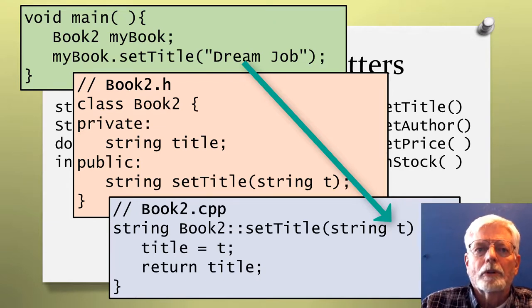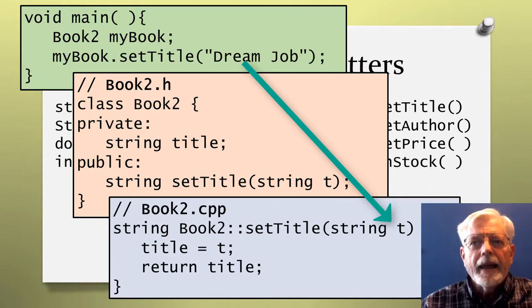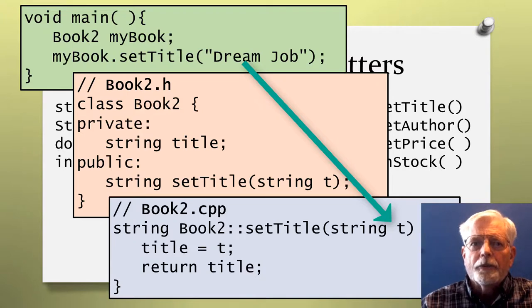But there is no executable code for the SetTitle method. The Book2.h file only has a function prototype for SetTitle. Book2.cpp contains the implementation code for the SetTitle method. Inside the parentheses is string t. The argument t is a variable of type string that is going to retrieve the string dreamjob that is passed when main calls MyBook.setTitle.